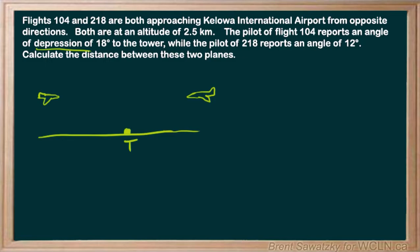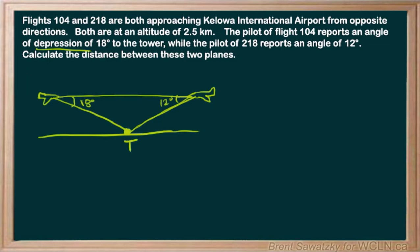In our case, looking at an angle of depression, we just draw our horizontal here and it's an angle down from that where the pilot is looking at the tower. We're told the angle of depression is 18 degrees, so we can mark that in. They're both at the exact same altitude, so let's draw a line across there. The other pilot is looking down at 12 degrees. We're looking for the distance between the planes.